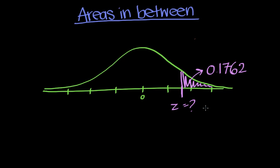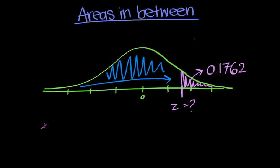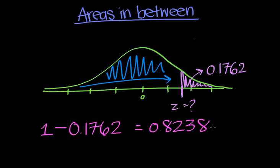Well, since the normal distribution table only measures probability from the left side to the right side, we have to find the probability of this region first. So we know that the entire area underneath the curve is equal to 1. So we subtract this area, which is 0.1762, and we get 0.8238. And that is the probability of this blue region here.